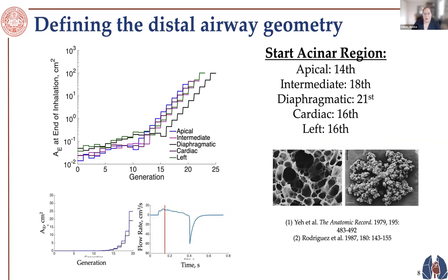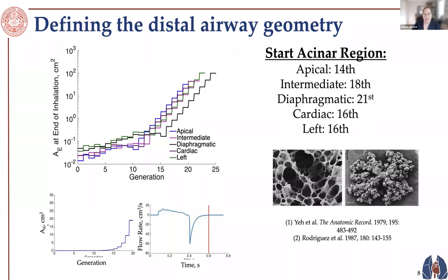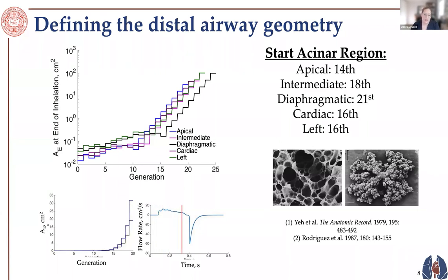The first part of this talk shows some work from my postdoc and PhD, looking at rats and then applying it to humans. The reason is that we can validate the simulation framework in rats before applying it to humans. The 1D geometry is lobe-specific, so each lobe is parameterized based on its geometry — specifically the diameters where the acinar region starts and the alveolar size.